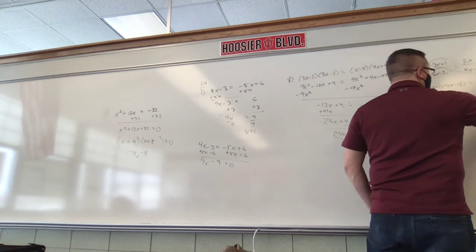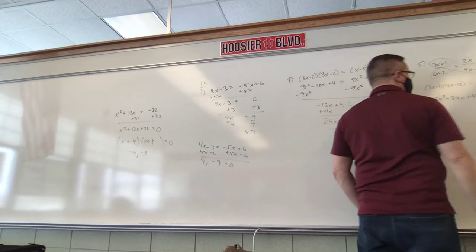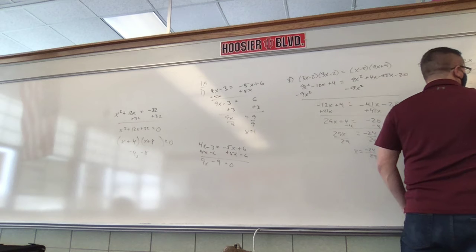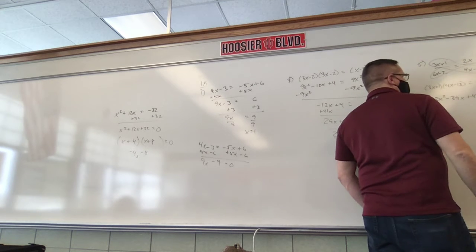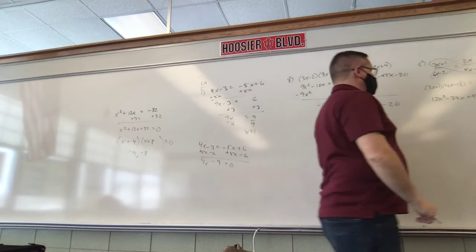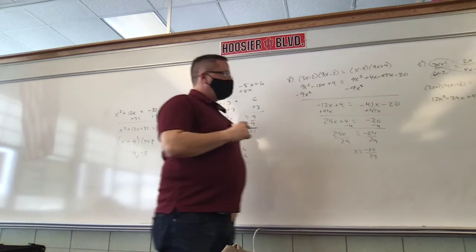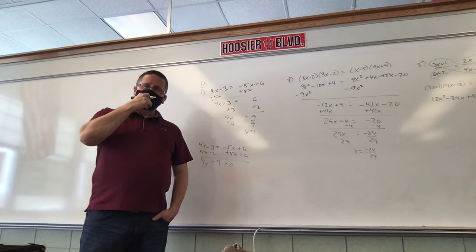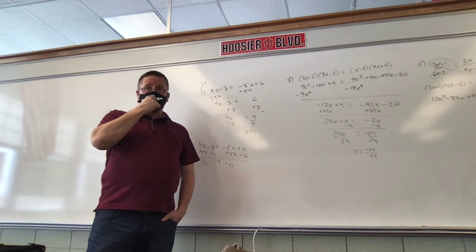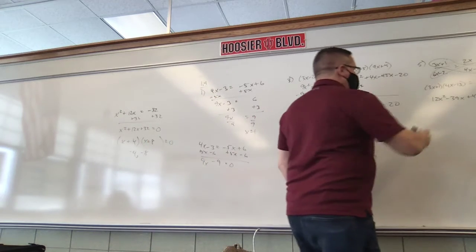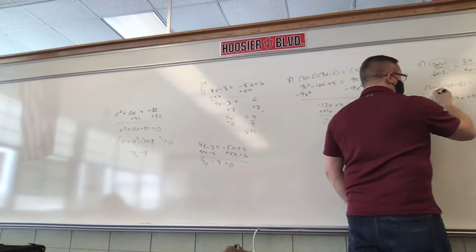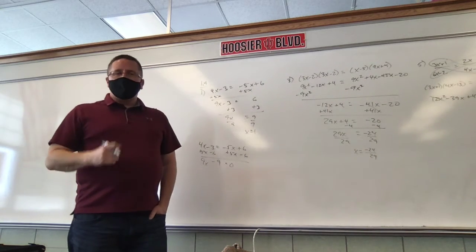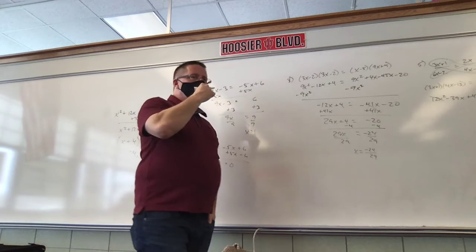We foil out the other side. 6x times 2x is 12x squared. Outers: 6x times 5 is 30x. Inners: negative 2 times 2x is negative 4x. Last: negative 2 times 5 is negative 10. Based on the last question, is this a quadratic? It is right now, but if I subtract 12x squared from each side, they're gone.